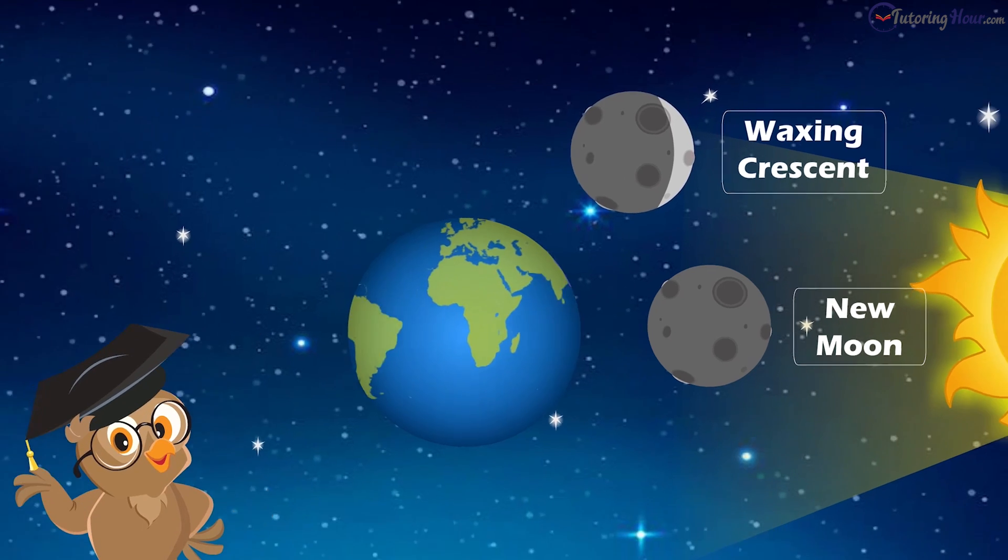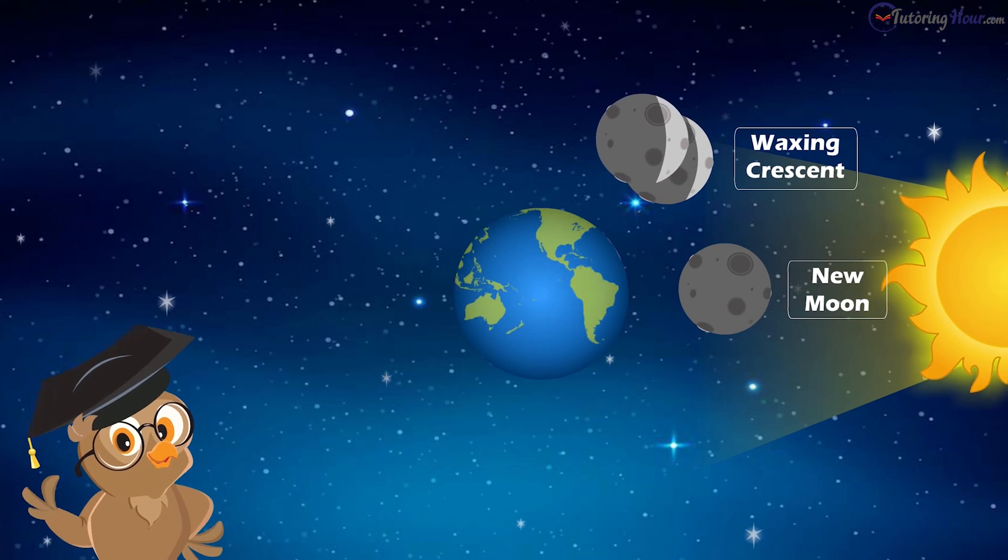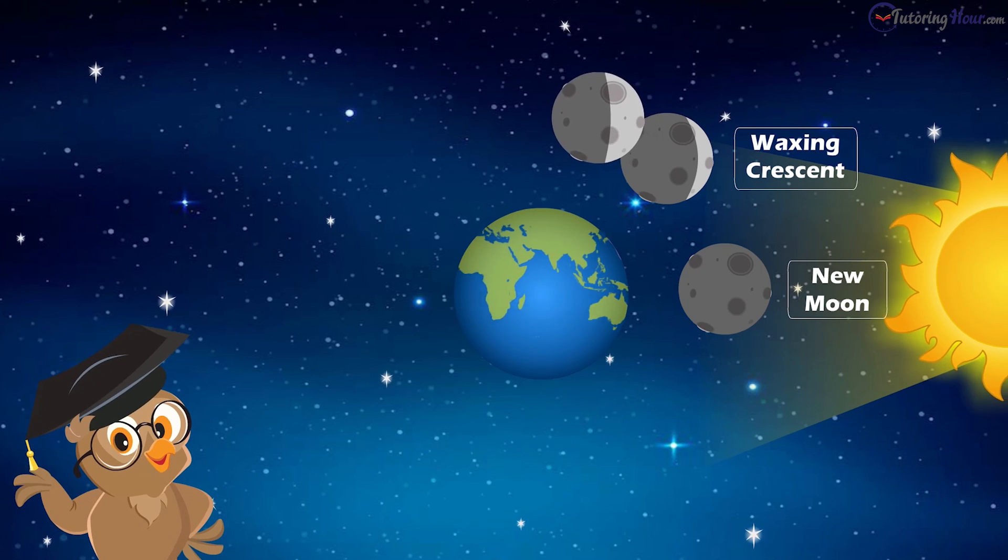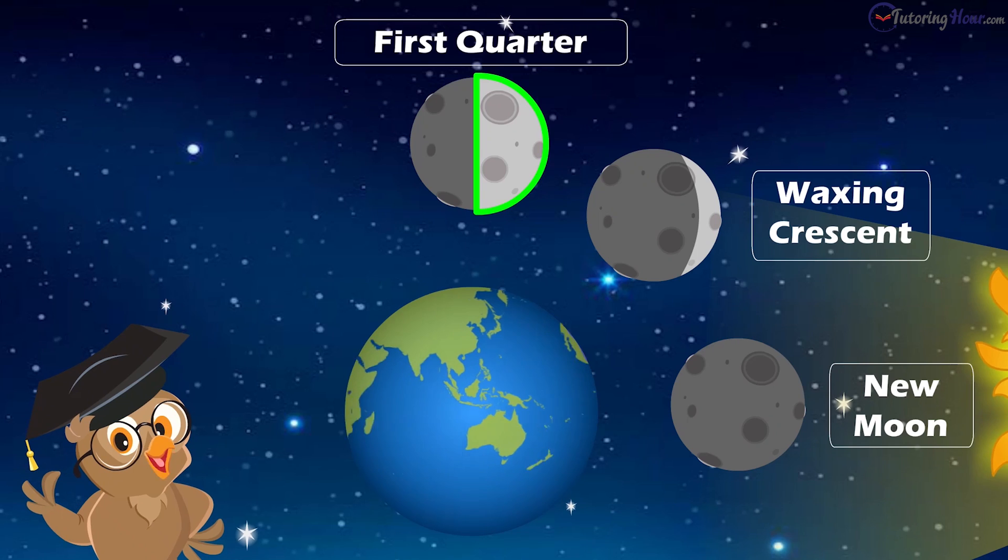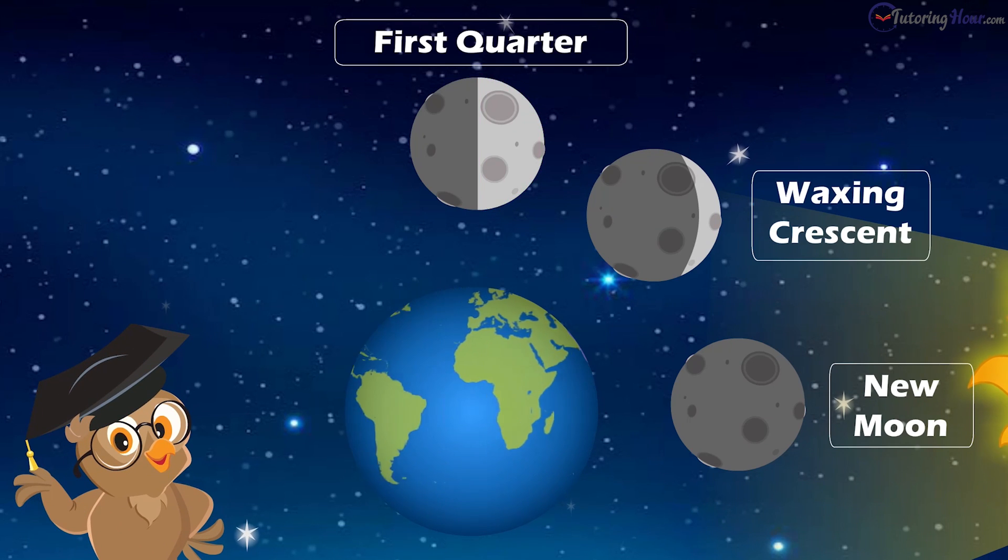Waxing means growing, so the crescent moon appears to grow a little more each day until it reaches the third phase, when we see the first quarter or the half moon.